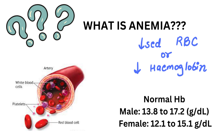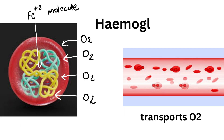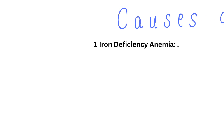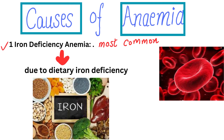First things first, what exactly is anemia? Anemia is a condition in which the body lacks enough RBCs or hemoglobin to carry sufficient oxygen to the body's tissues. Hemoglobin is a protein in RBCs that binds to oxygen and transports it throughout the body.